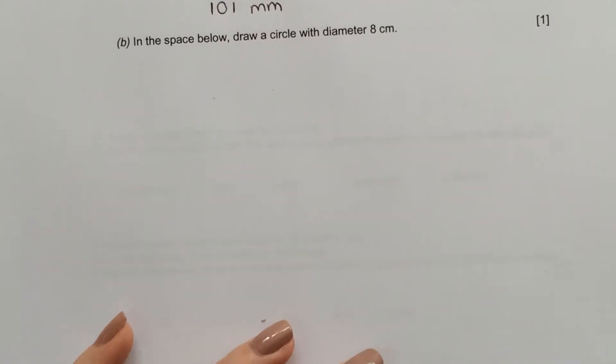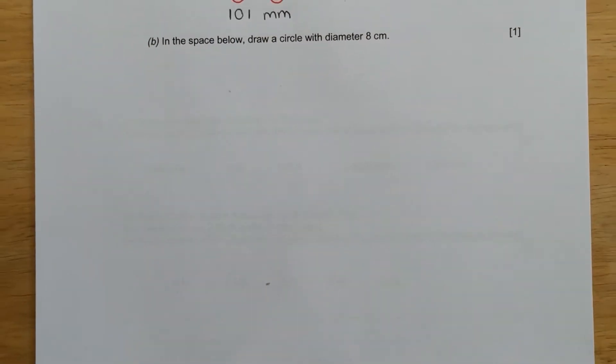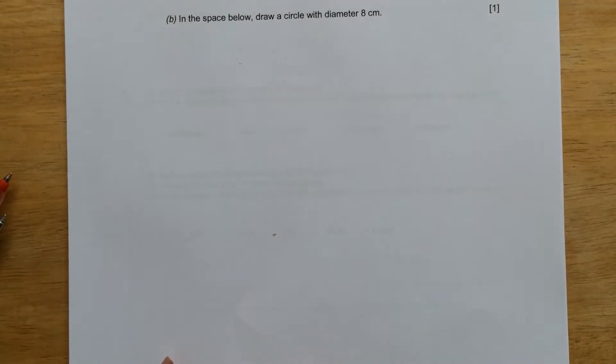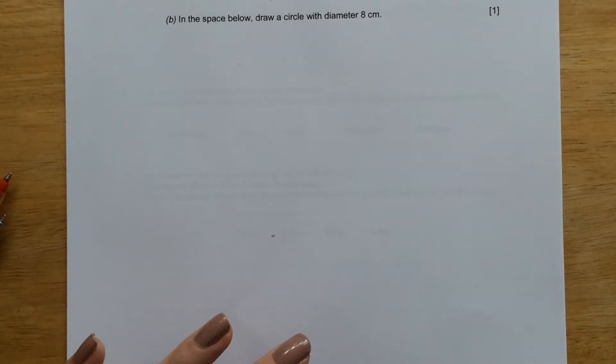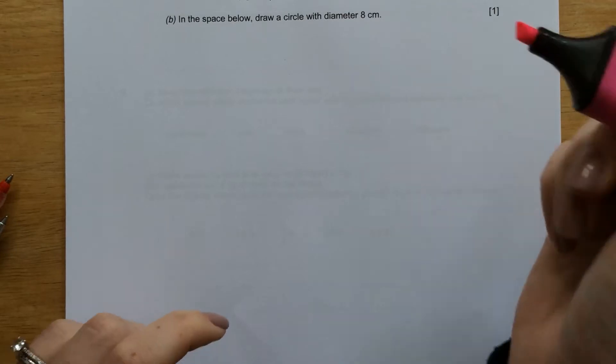Now, part B. Part B says, in the space below, draw a circle with a diameter of 8 centimetres. So firstly, we need to think what the diameter is.